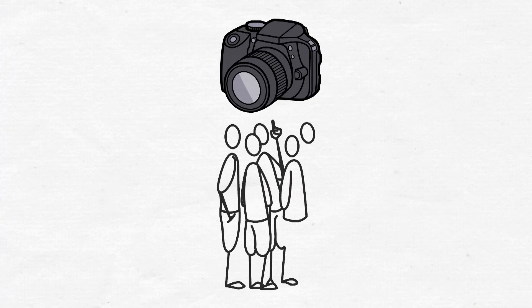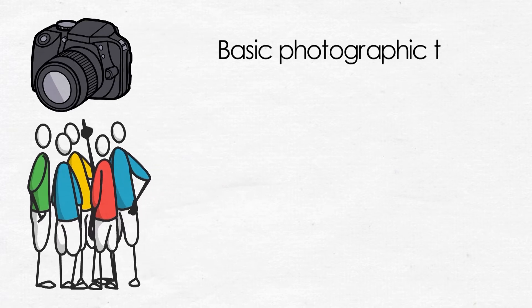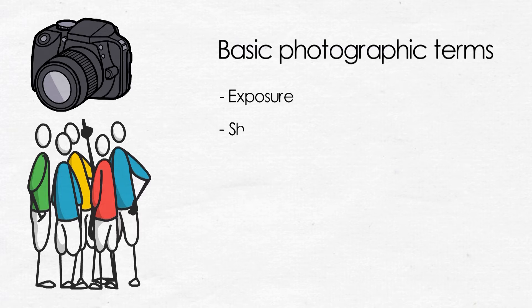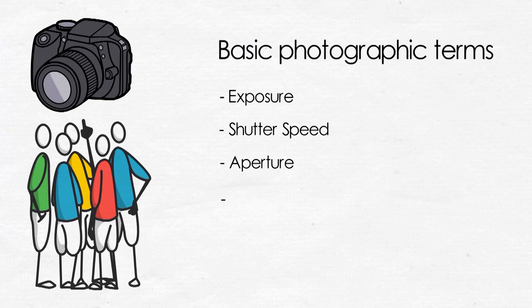Now let us look at some basic photographic terms which you will have to understand to take photographs, not only good photographs but also to take any type of photograph. You've got to understand these terms and learn how to use them. The basic photographic terms which I am talking about are: exposure, shutter speed, aperture, ISO, lenses, focal length, and depth of field.